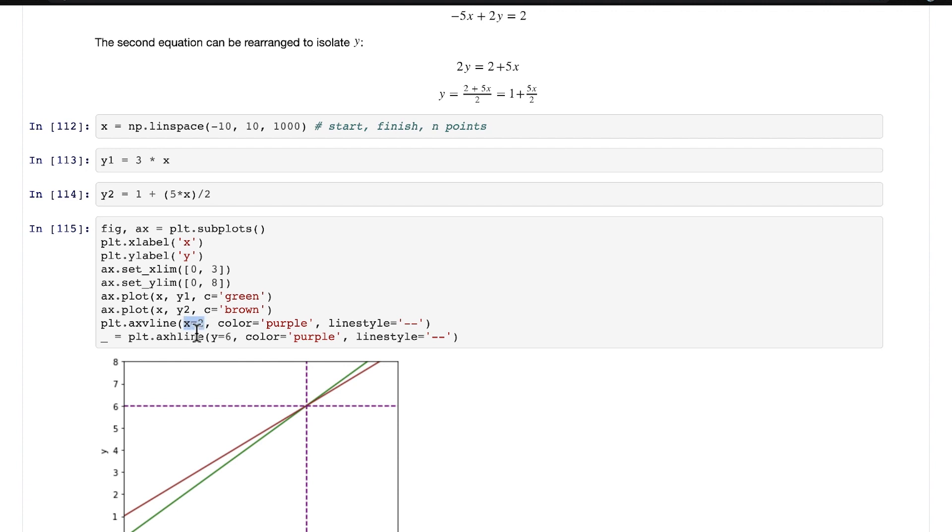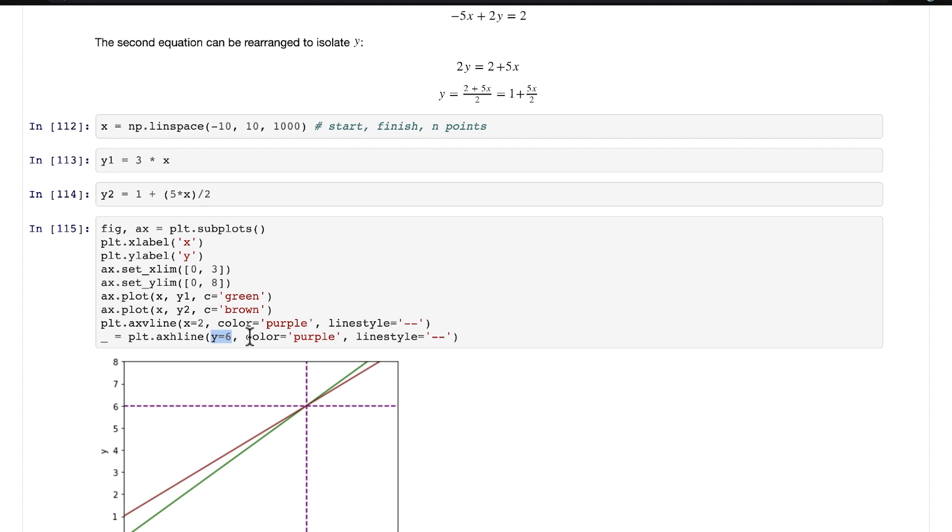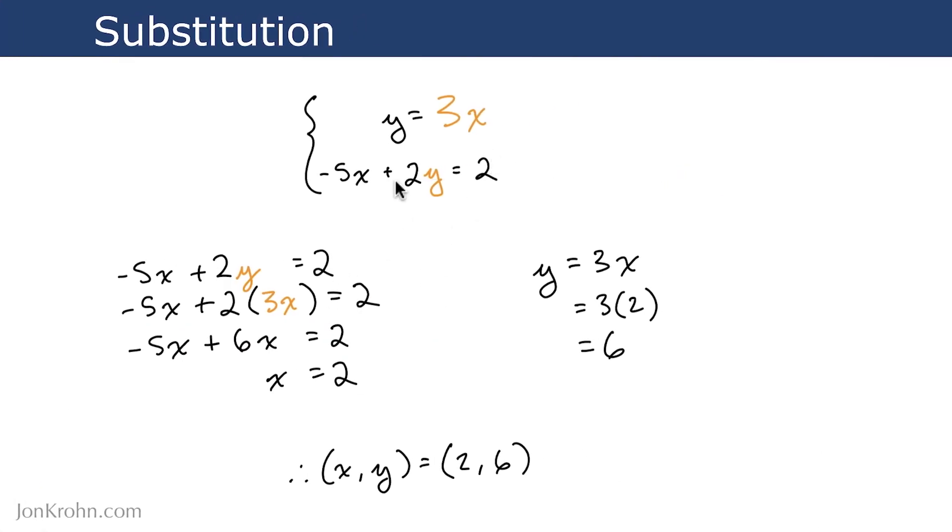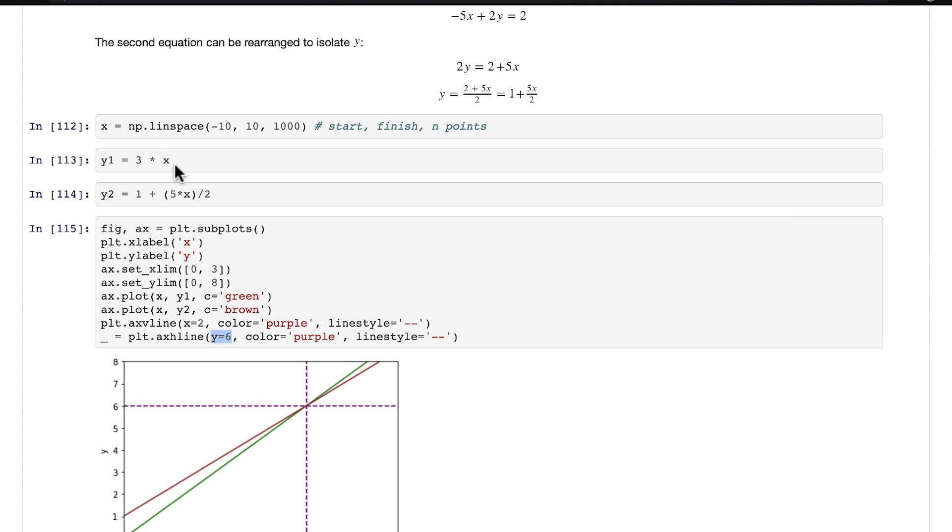We've already solved these equations, so you know the rough range that you'll need x and y to be in to create a nice plot. That's definitely helpful. For example, we know that the x point that we're solving for is x = 2 and y = 6, from having solved the system by hand.